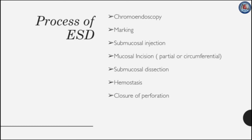Typical ESD is accomplished in a stepwise manner including marking the lesion, incision, and submucosal dissection with simultaneous hemostasis. Absolute delineation and definition of the border of the esophageal neoplasm is crucial. Chromoendoscopy using several dyes or NBI with magnification is often used for pre-procedural assessment. Once the margins of the lesion are fully visualized, argon plasma coagulation or an ESD knife using soft coagulation current can be applied to mark the resection borders with dots around the lesion.